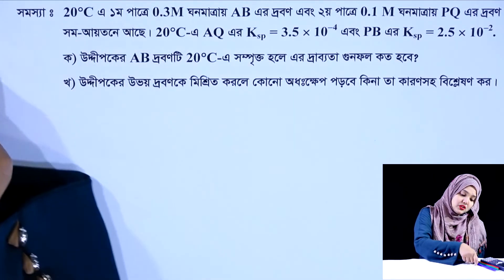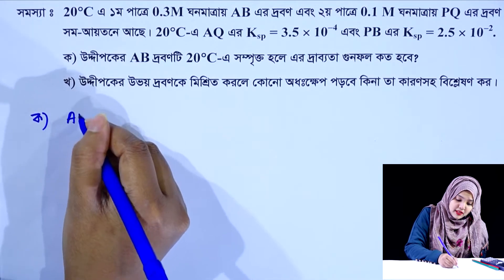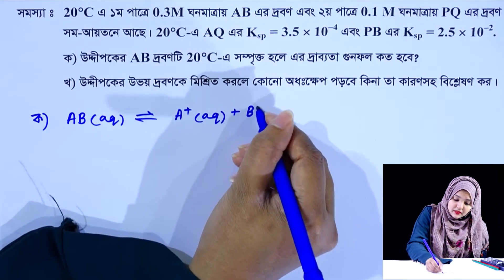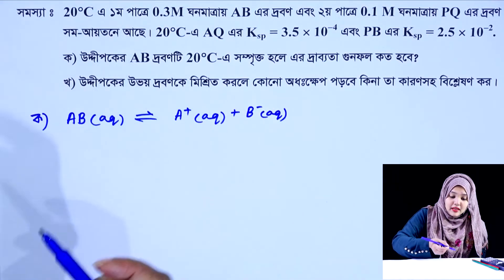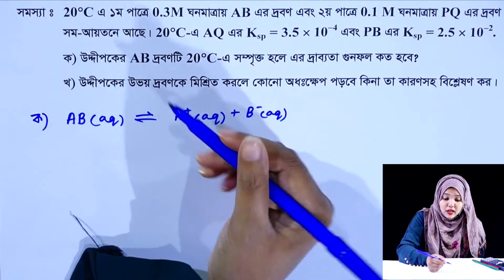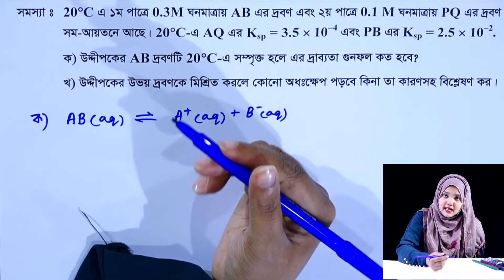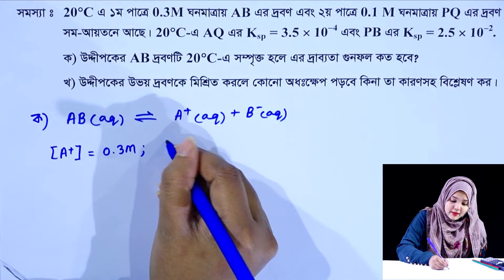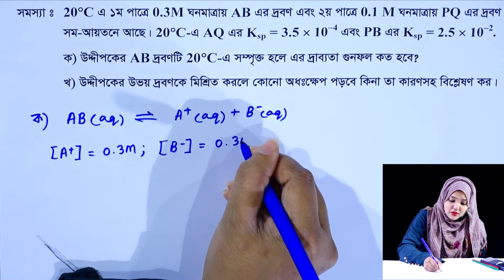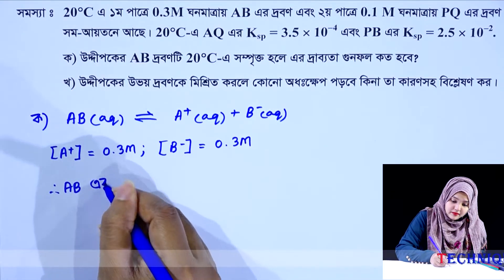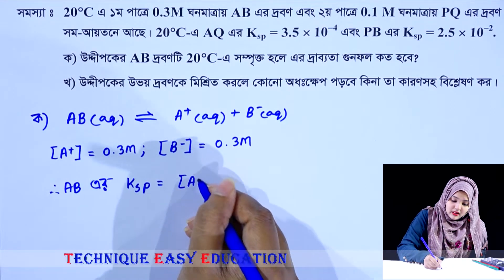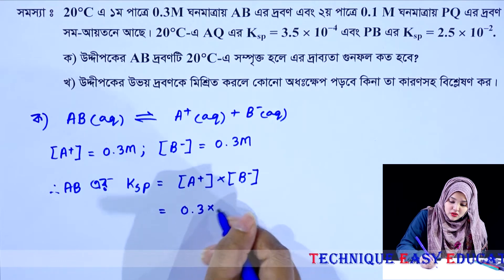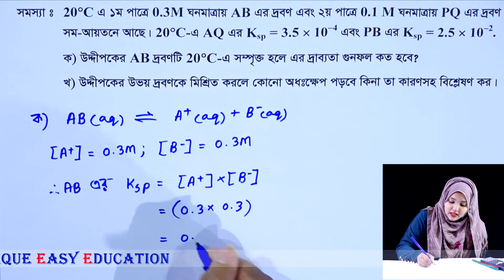প্রথমে আমরা AB জোলীওর বিশ্লেষণ করি। AB বিয়োজিত হলে A আয়ন এবং B আয়ন তৈরি করে। AB-এর ঘণমাত্রা যদি 0.3 মোলার হয়, তাহলে 0.3 মোলার A আয়ন তৈরি হবে এবং 0.3 মোলার B আয়ন তৈরি হবে। সুতরাং A আয়নের ঘণমাত্রা 0.3 মোলার এবং B আয়নের ঘণমাত্রা 0.3 মোলার।